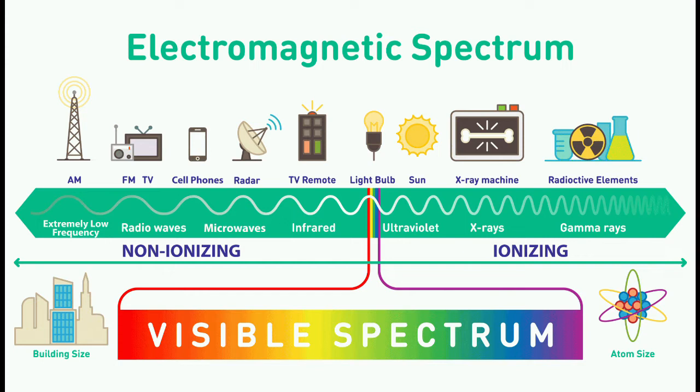Radiation is typically categorised as ionising or non-ionising. The main difference is in the amount of energy the radiation carries. Ionising radiation carries more energy than non-ionising radiation.